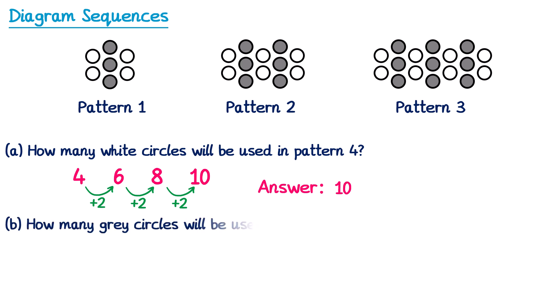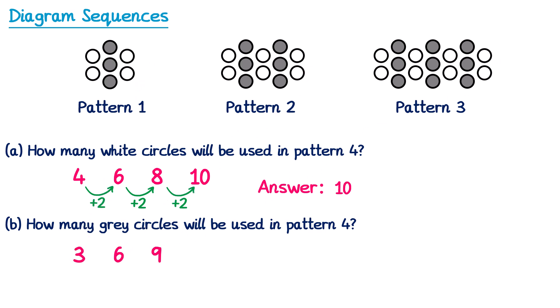For part b: how many grey circles will be used in pattern 4? Pattern 1 has 3 grey circles, pattern 2 has 6, and pattern 3 has 9. To get from 3 to 6 we add 3, and from 6 to 9 we also add 3. So to get the next number we add 3 again: 9 add 3 is 12. So the answer is 12 grey circles.